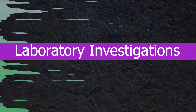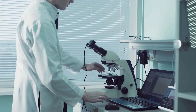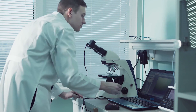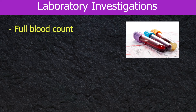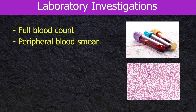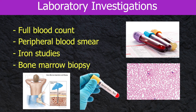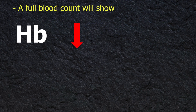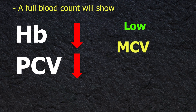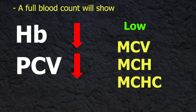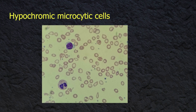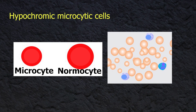The usual investigations done to diagnose iron deficiency anemia are a full blood count, peripheral blood smear, iron studies, and bone marrow biopsy for definitive diagnosis. A full blood count will show decreased hemoglobin, decreased hematocrit, and low MCV, MCH, and MCHC. In the blood picture, we will be able to see hypochromic microcytic cells. If the central pale area of erythrocytes is bigger than one-third of the cell, they are named hypochromic.